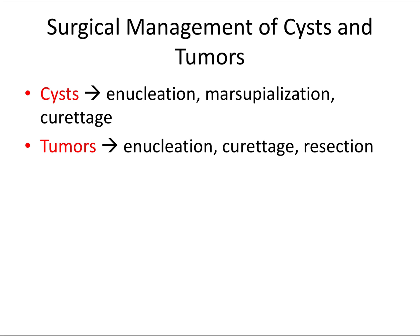This is a bit off topic but in the same realm. Let's briefly talk about some surgical management techniques for cysts and tumors. For cysts, we often opt for enucleation, marsupialization, or curettage. For tumors, enucleation and curettage are also used, and more aggressive resection can be used for a more aggressive tumor like ameloblastoma.